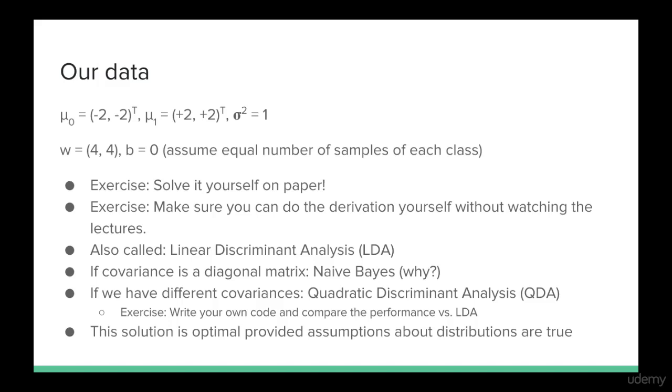As an exercise, I want you guys to prove to yourselves that the solution is w equals four four and b equals zero. We're assuming that we have an equal number of samples of both classes. So that means alpha equals 0.5. You also want to make sure that you can do the derivation in this lecture on your own, without watching the lecture.